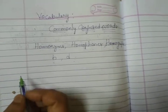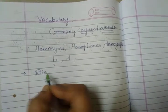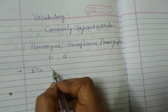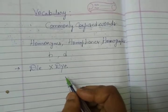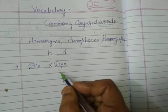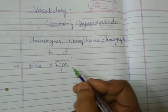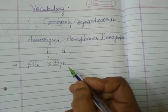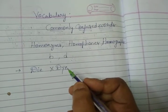Let me write it down. Look at here: D-I-E, die. What is this commonly confused word? D-Y-E, dye. Same pronunciation but different spellings and different meanings. In your textbook they have given a number of examples and exercises 1 and 2. Let me go through whatever they had given in the textbook.